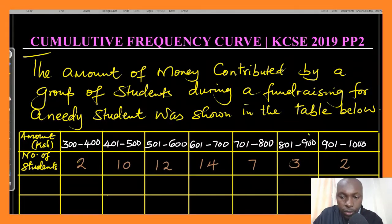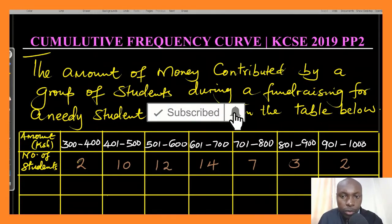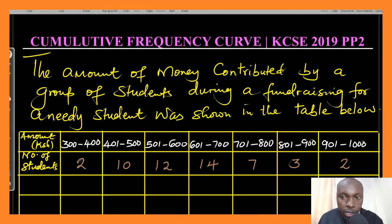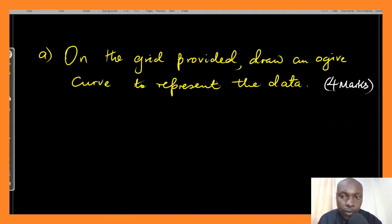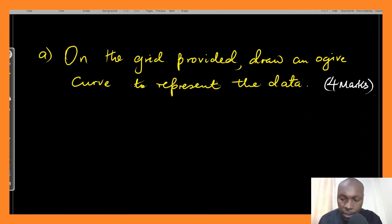The question reads: the amount of money contributed by students during a fundraising for a needy student is shown in the table below. There is a column for the amount — 300 to 400, 400 to 500, and so on — and the number of students who contributed those amounts. The first question asks: on the grid provided, draw an ogive curve to represent the data.